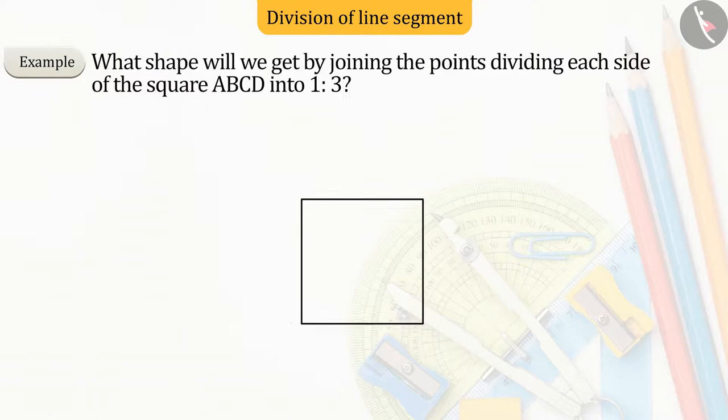By joining the points dividing each side of the square ABCD in the ratio 1:3, what shape will we get?